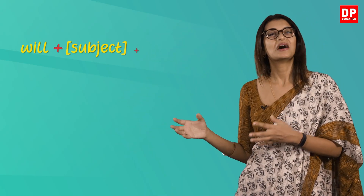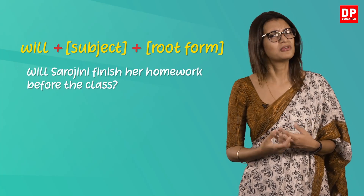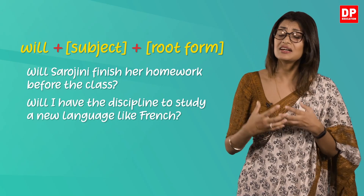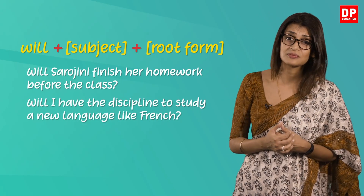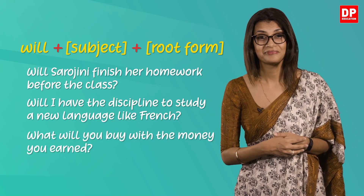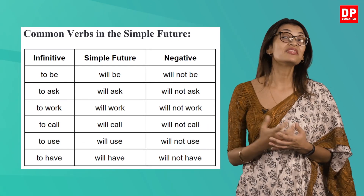Now let's look at how you can form a question using the simple future. To ask a question in the simple future, the formula is 'will' plus subject plus root form. For example: 'Will Sarojini finish her homework before the class?' 'Will I have the discipline to study a new language like French?' 'What will you buy with the money you earned?' Notice how there is a switch between 'will' and the subject.